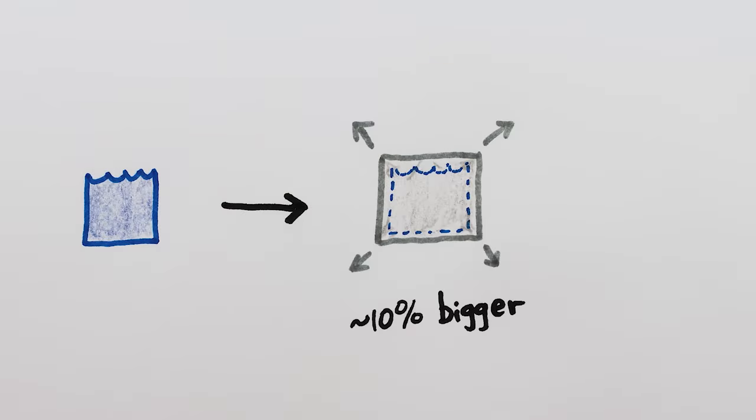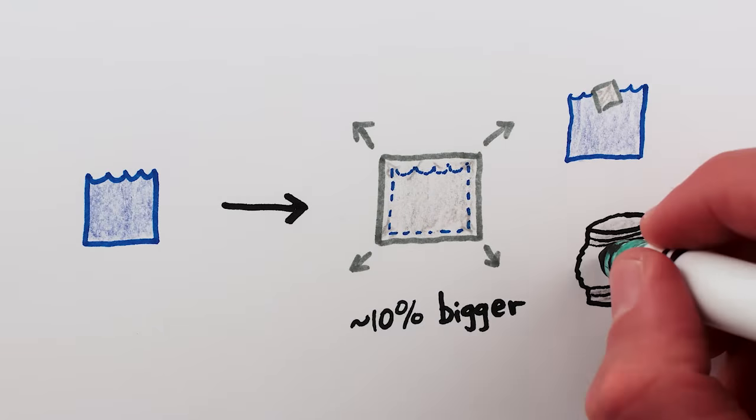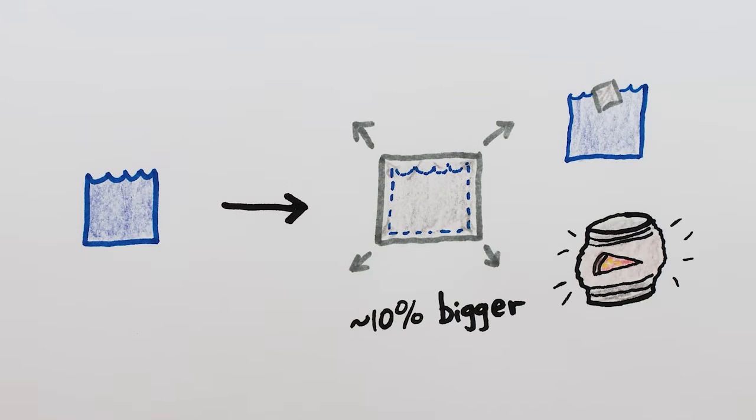When water freezes, it expands. That's why ice floats, and why cans and jars bulge or explode in the freezer.